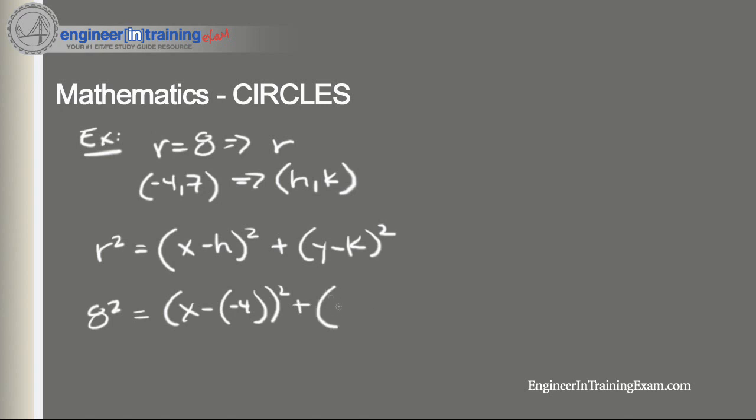So this ultimately plays out to be (x plus 4) squared plus (y minus 7) squared is equal to 64.